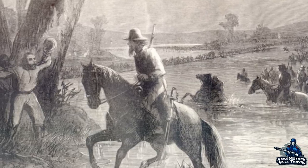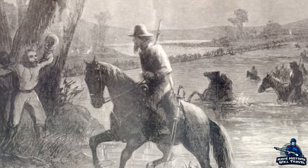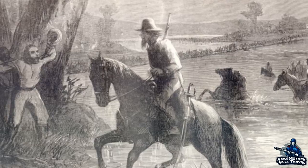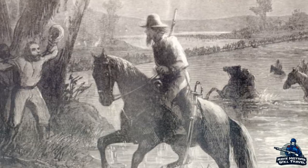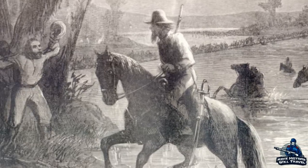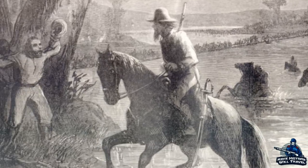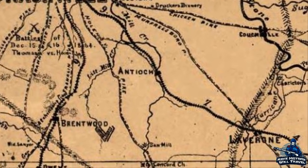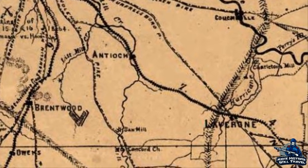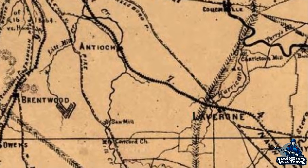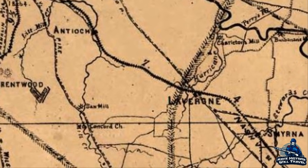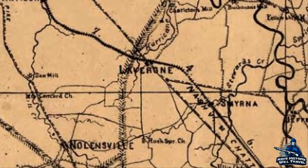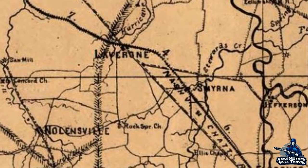However, in late December, Bragg sent both Forrest and Morgan on raids into West Tennessee and Kentucky respectively, leaving only the cavalry under Joseph Wheeler to act as the eyes and ears of the army. Rosecrans wasted no time in moving once those threats were gone, and he moved his army along three routes the day after Christmas. The Union commander brought with him around 40,000 men, leaving a great deal in Nashville to guard the city and supply lines.